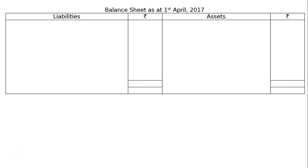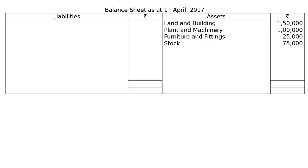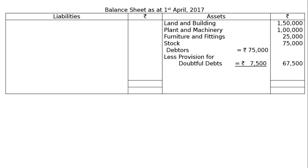Now, balance sheet as at 1st April 2017, with liabilities and rupee symbols on one side and assets and rupee symbol on the other. On the asset side: land and building Rs. 1,50,000; plant and machinery Rs. 1,00,000; furniture and fittings Rs. 25,000; stock Rs. 75,000; debtors Rs. 75,000 — 10% of this will be the new provision, less provision for doubtful debts Rs. 7,500, giving a final balance of Rs. 67,500. Next, bills Rs. 30,000 — same old balance. Then bank Rs. 50,000, and the new partner is bringing in Rs. 1,25,000.